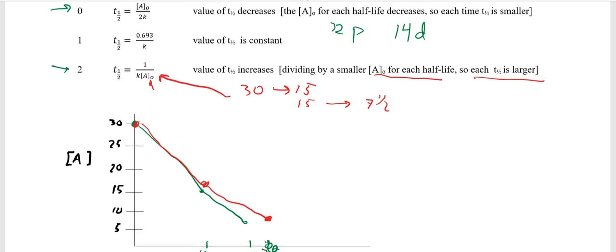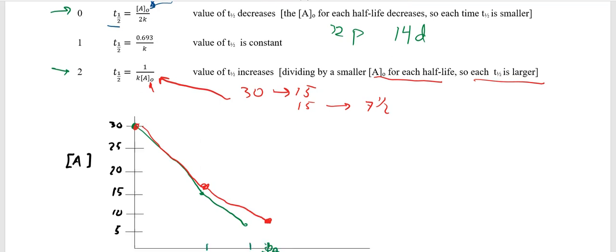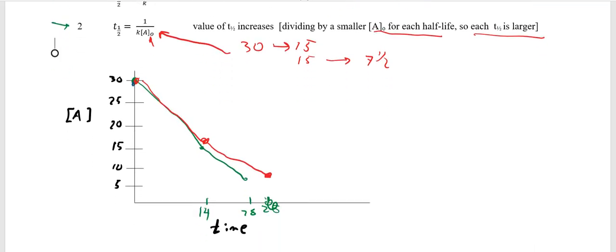Zero-th order is the opposite. A-naught's on the top up here. So the original amount's on the top. So as that gets smaller, the whole thing's just going to keep getting smaller. So t sub one-half gets smaller. So if we go down to our graph, we start at 30, our ugly graph. We start at 30. The first half-life takes us down to our 15. But then the second half-life isn't going to take as long. So it's not going to spread out as far over the x-axis. So it's going to come in.